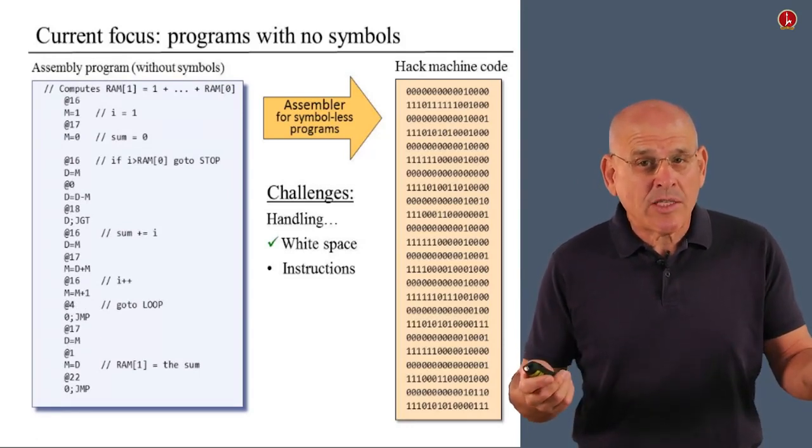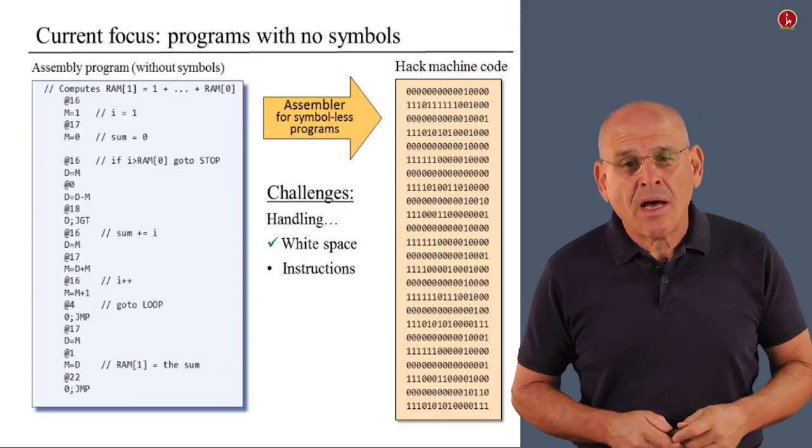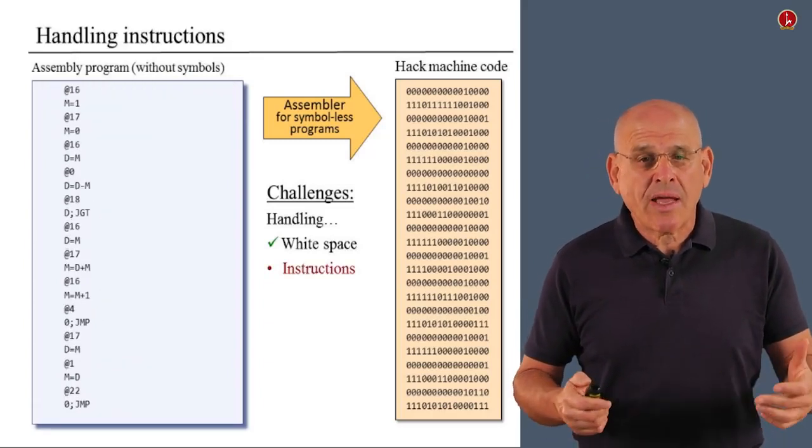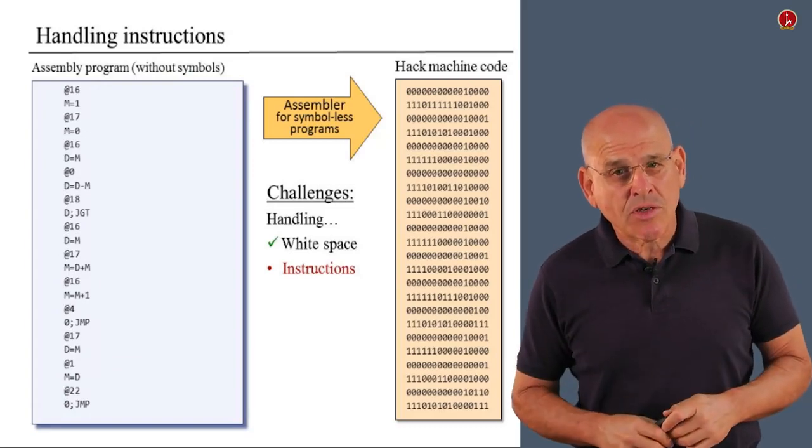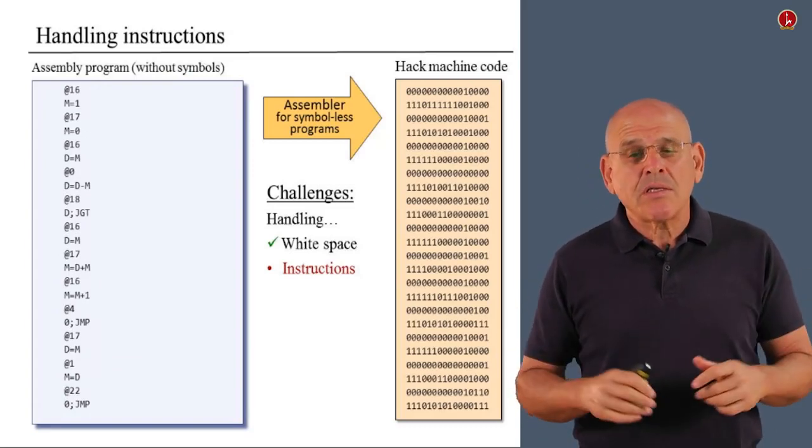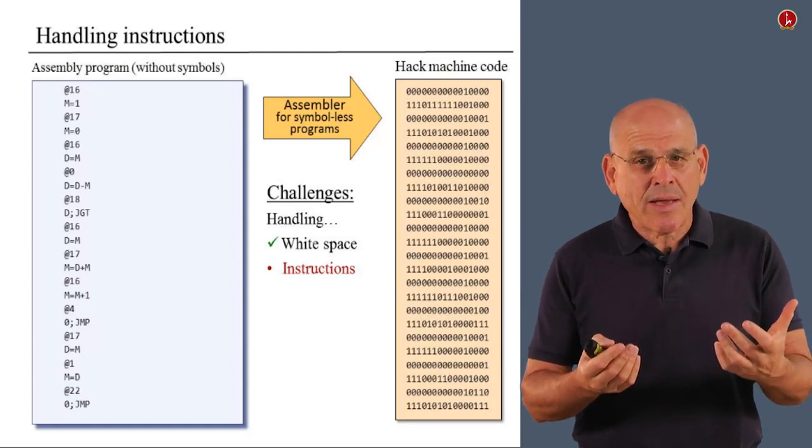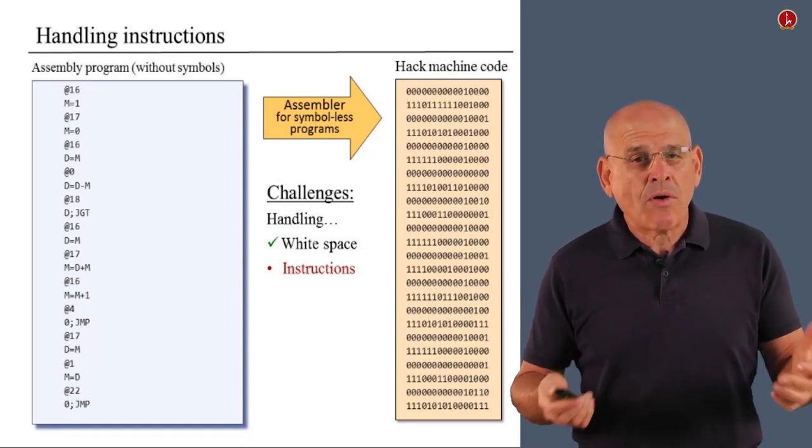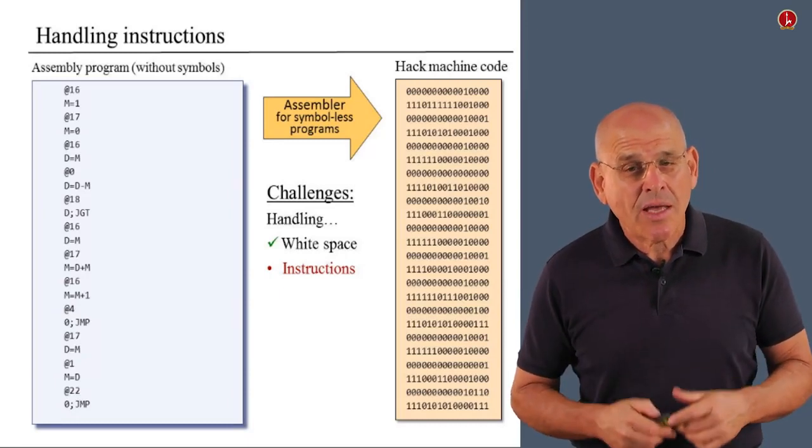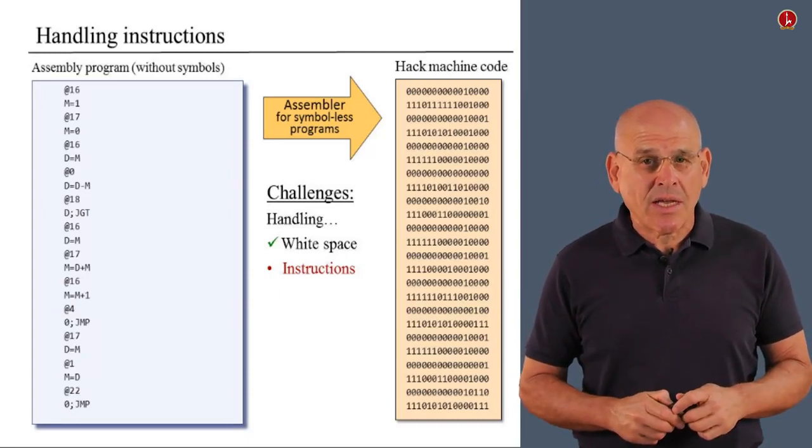Basically, we are going to ignore white space, so what remains is a program that contains instructions only, A instructions and C instructions, without symbols. So, in order to write an assembler that can translate such a program into binary code, we have to know how to translate A instructions and C instructions. And that's exactly what we're going to discuss next.